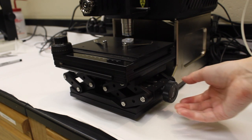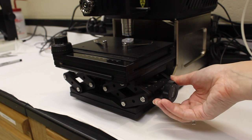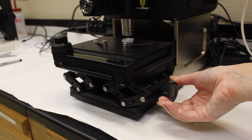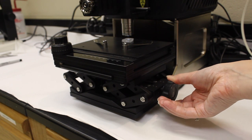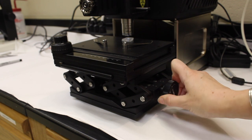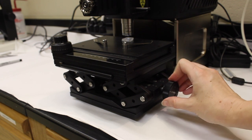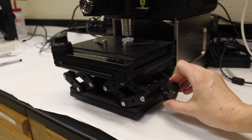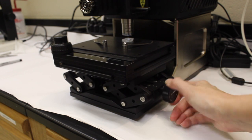To move the stage upwards to focus the sample, turn the knob on the side counterclockwise in the direction of the plus sign. To move the stage downwards, turn it clockwise in the direction of the negative sign on the dial.